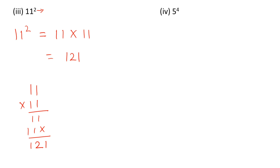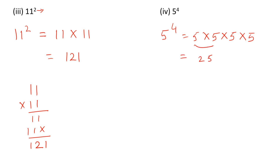The last one: 5 raised to the power of 4 — multiply 5 four times. So that's 5 multiplied by 5 multiplied by 5 multiplied by 5. Multiplying in pairs: 5 times 5 is 25, and 5 times 5 is 25.